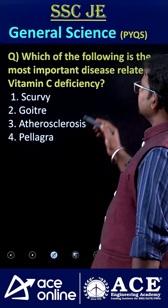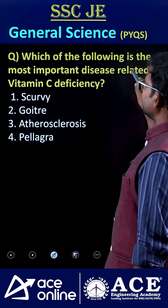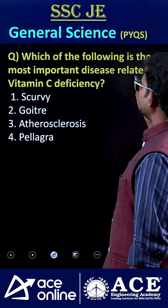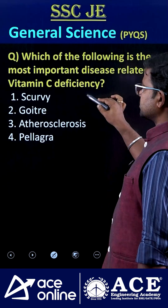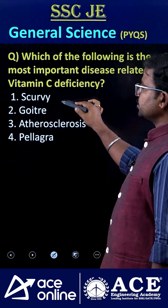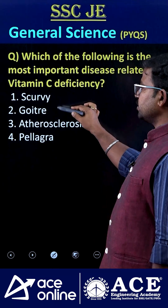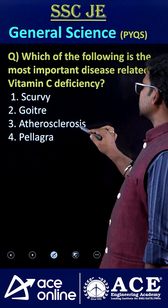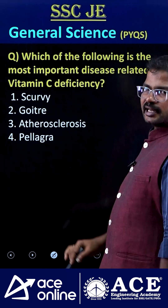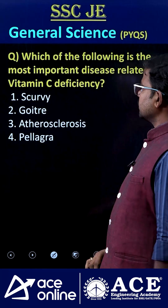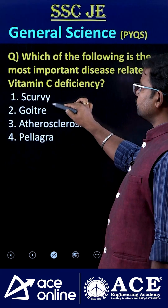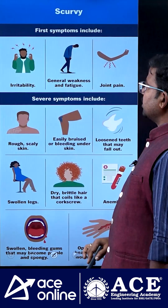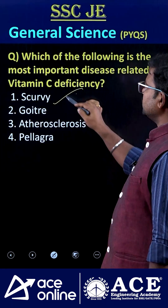Welcome to ACE Online. Which of the following is the most important disease related to vitamin C deficiency? The options are: scurvy, goiter, atherosclerosis, and pellagra. The correct answer is option one — scurvy.